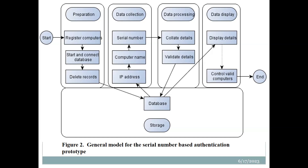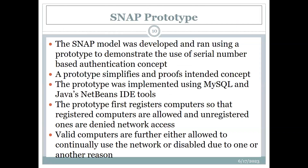After that, the details are posted to the database and then retrieved into an interface — part of the data display — for controlling the decision of whether a computer can be allowed or not. To do this, we had to implement and demonstrate it, which is also part of the design science research. We demonstrated using a prototype because it would simplify and prove that we can use a serial number to authenticate a computer in our network.